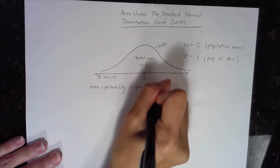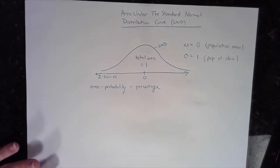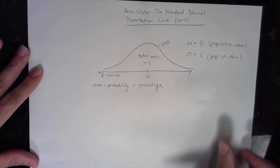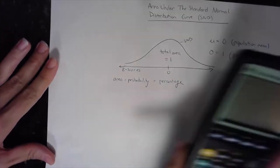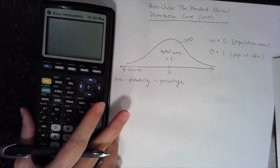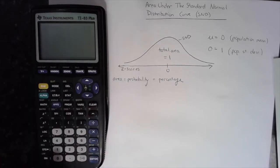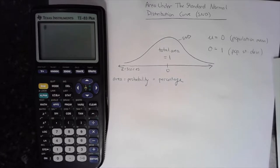You can be asked to find area under a curve, to find a probability on a standard normal distribution curve, or to find a percentage — they all mean the same thing. The calculator I'm going to use is the TI-83 Plus, which basically has the same buttons as the TI-84 and TI-84 Plus. You can use your 84, 84 Plus, 83, or 83 Plus — those are the most common calculators for these situations.